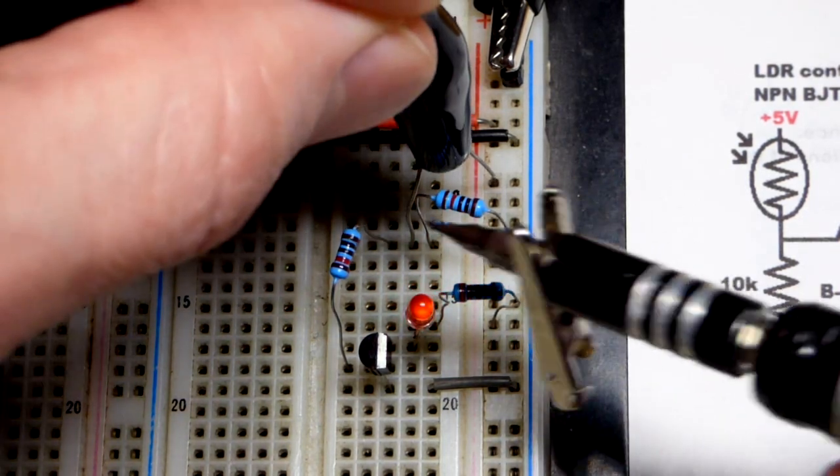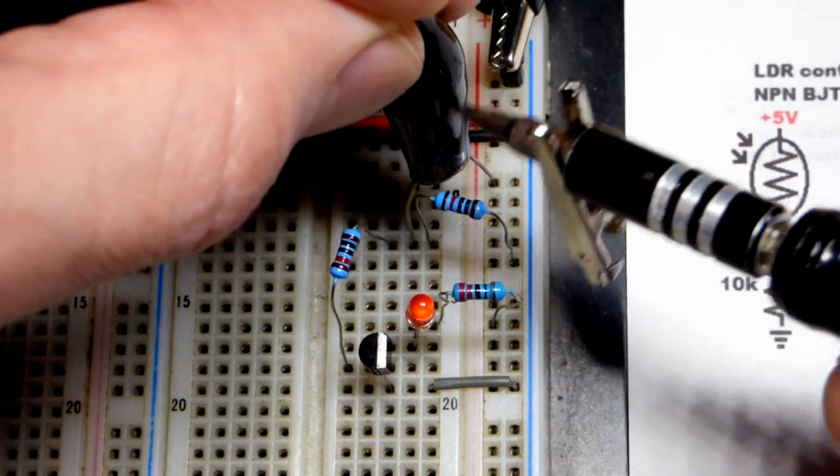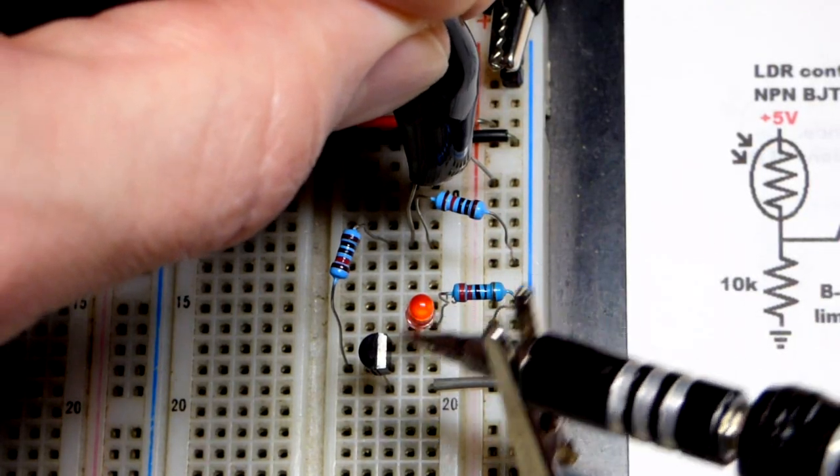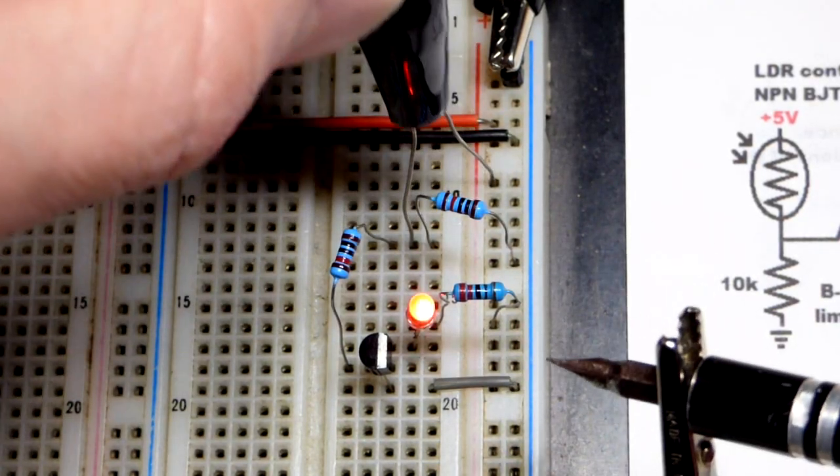The 10k resistor is not pulling it to ground until I get it dark enough. Right there, now the 10k resistor is getting to ground enough where we don't have base to emitter current. Transistor's off.